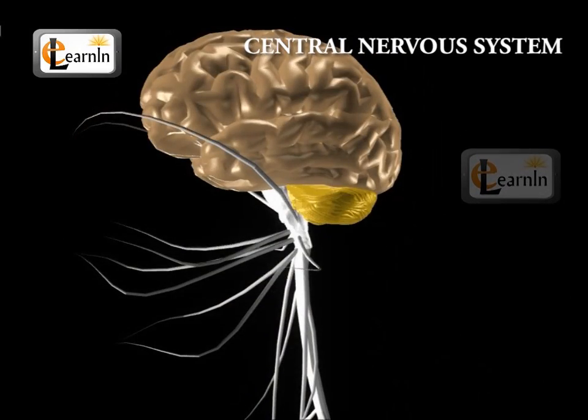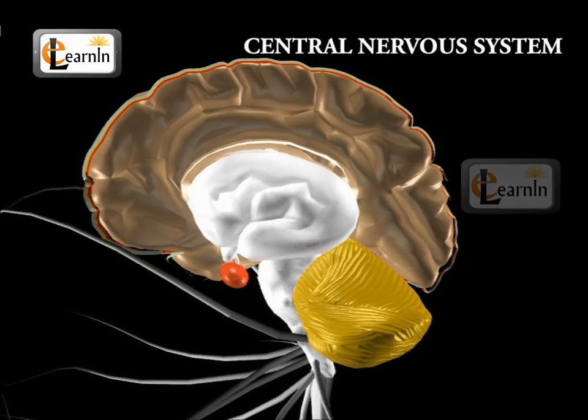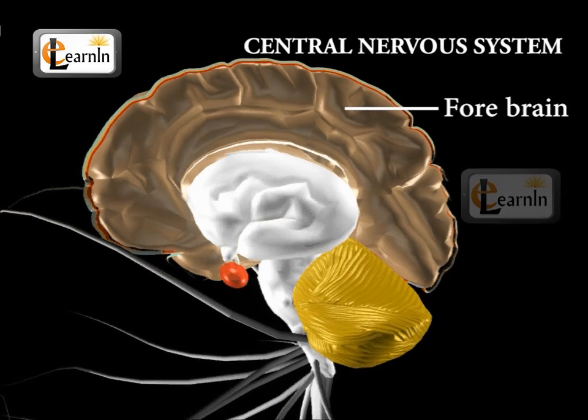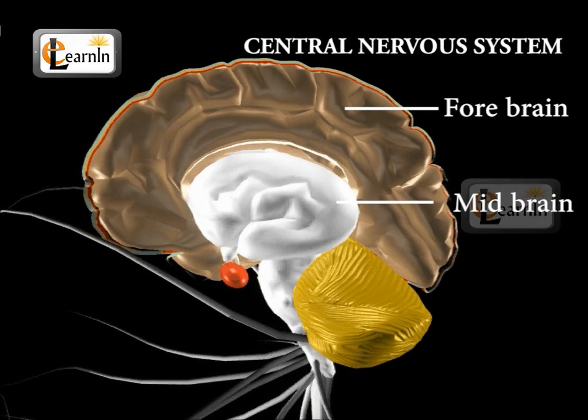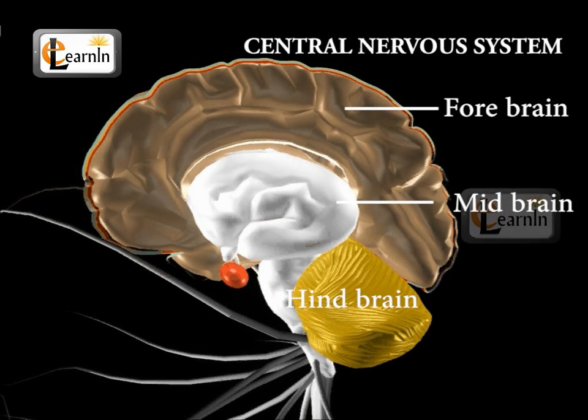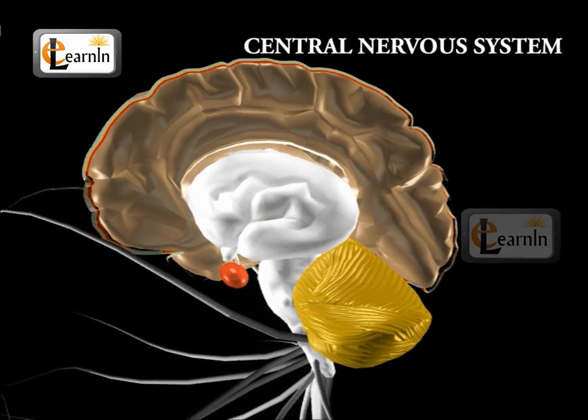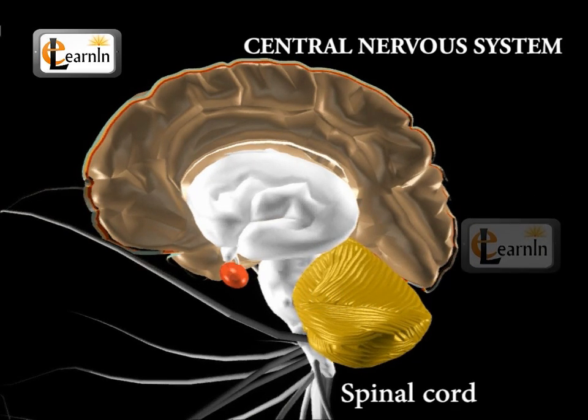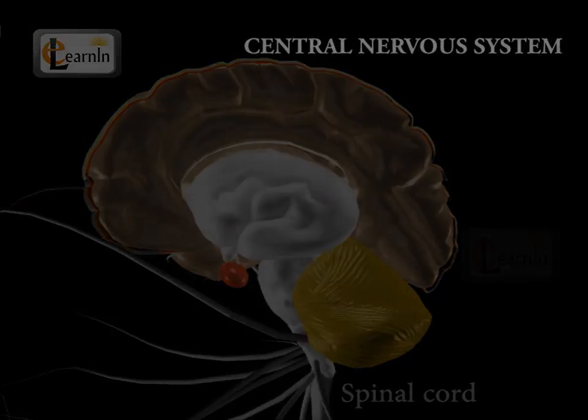The brain is divided into three parts: forebrain, midbrain, and hindbrain. The hindbrain is connected to the spinal cord.